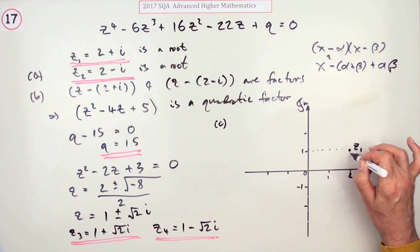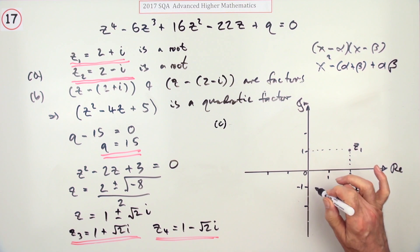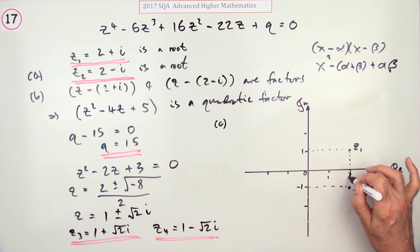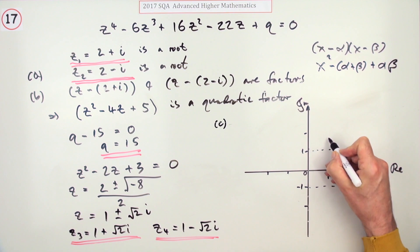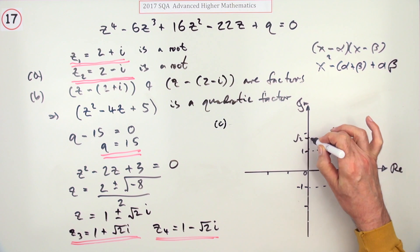z₂ is the conjugate, symmetrical about the real axis. z₃ is 1 along and √2 up. z₄ is its conjugate, 1 along and -√2 down.